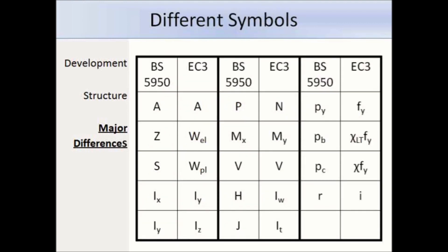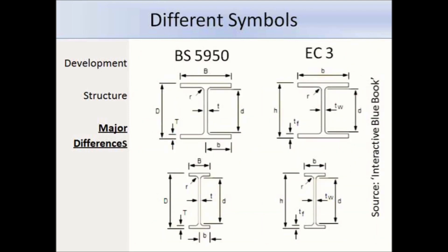Another change is the use of different symbols and the inclusion of informative subscripts. For example, the elastic modulus is indicated by the 'el' subscript and the plastic modulus by 'pl', so the symbols are quite meaningful. Due to the member axis changing, terms relating to the major or minor axis — like the second moment of area — will change, so Ix becomes Iy and Iy becomes Iz. A number of symbols used to identify section dimensions have also changed. For example, the flange thickness in Eurocode 3 is tf compared to capital T in BS 5950, the web thickness is now tw compared to small t, and H is used for the depth of the beam.